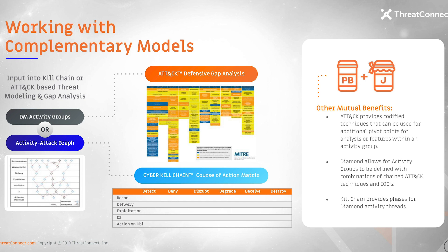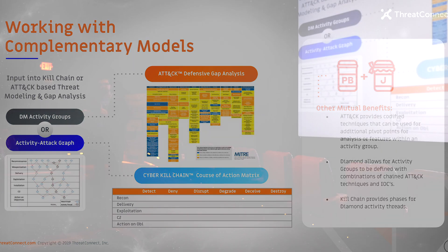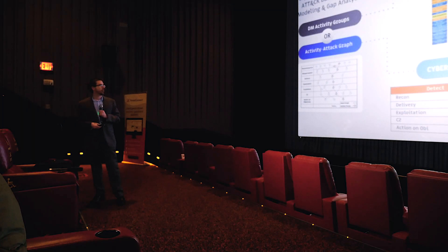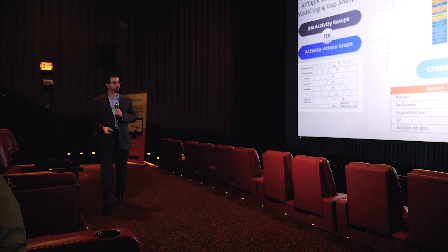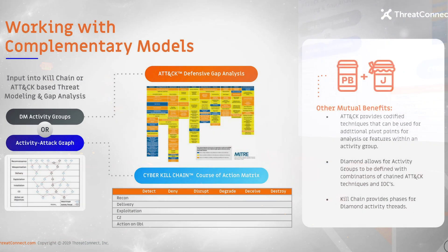Bringing this into the 2019-2020 timeframe: the diamond can be used with the Cyber Kill Chain, and you can also populate a course of action matrix using information from the diamond. If you know an adversary's capabilities and enumerate them with the diamond based on grouping functions, you can fill out where you stand in mitigating those — very similar to what you can do with MITRE's ATT&CK in the Navigator.